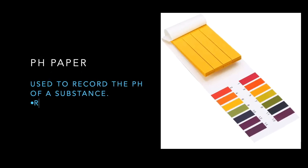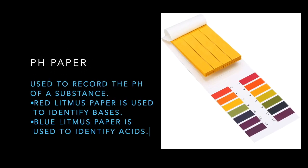pH paper: used to record the pH of a substance. Red litmus paper is used to identify bases, and blue litmus paper is used to identify acids.